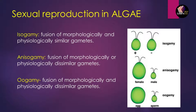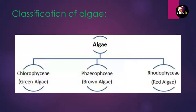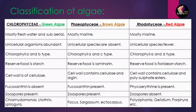Now moving to the classification of algae: algae are divided into three classes — Chlorophyceae, Phaeophyceae, and Rhodophyceae. Chlorophyceae is also known as green algae, Phaeophyceae as brown algae, and Rhodophyceae as red algae. We will discuss green, brown, and red algae step by step, moving from left to right.